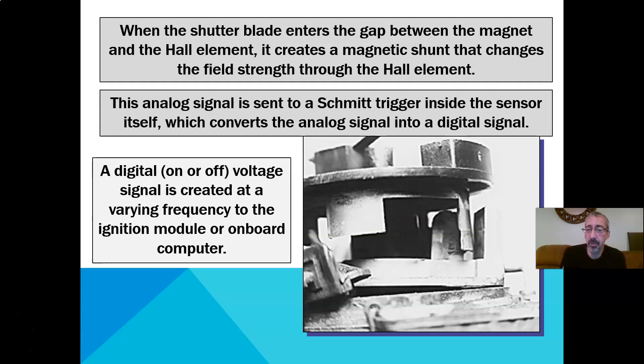This is giving you another picture of the shutter. You can see that we have a sensor here and a permanent magnet. We send a signal across it. When the distributor turns, the shutter blocks it, shutting it off, and we get a digital signal. This signal is called a Schmitt trigger inside the sensor itself, that converts the analog signal into a digital signal.